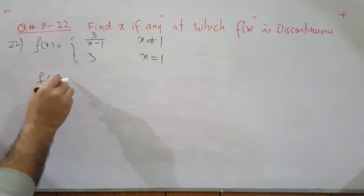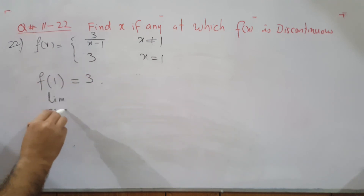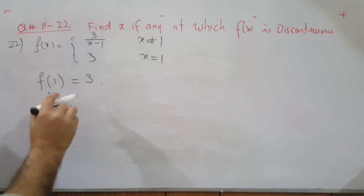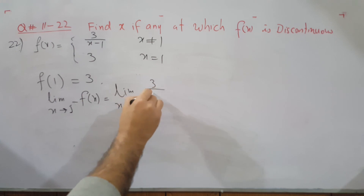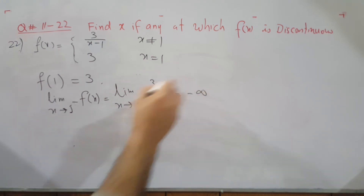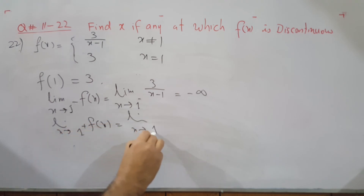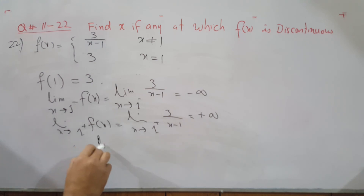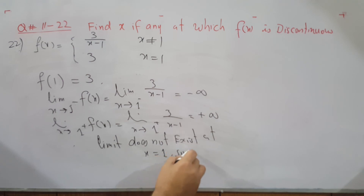For another piecewise function, we check at x equals 1. The function value is 3. The left-hand limit as x approaches 1 from the negative side using 3/(x−1) gives negative infinity, and the right-hand limit as x approaches 1 from the positive side gives positive infinity. Therefore the limit does not exist at x equals 1, and the function is not continuous there.